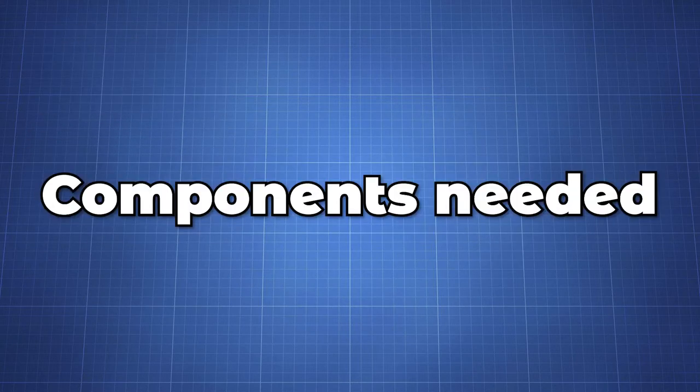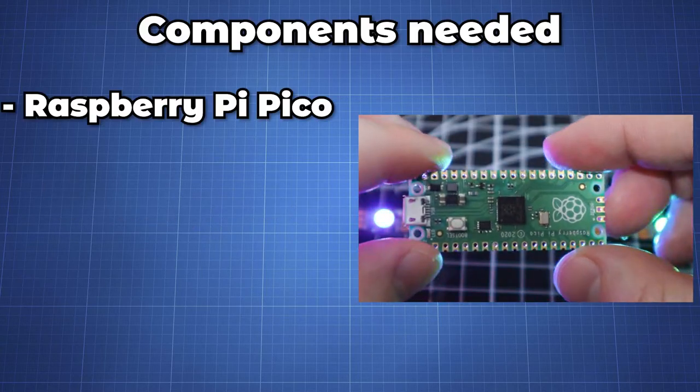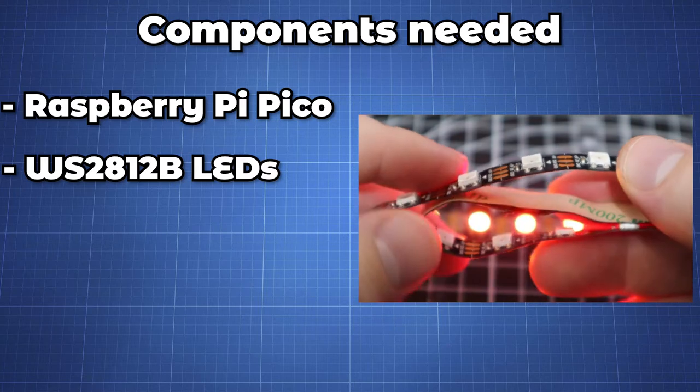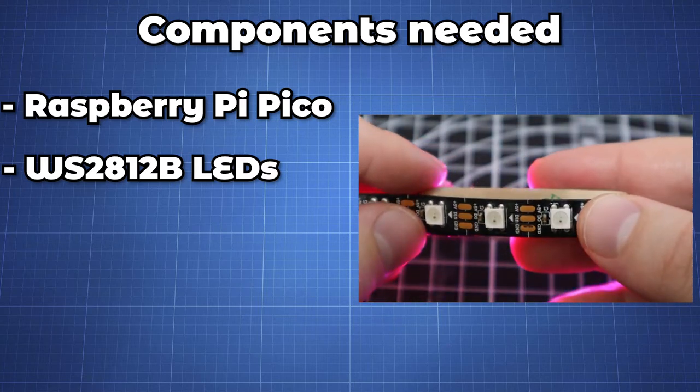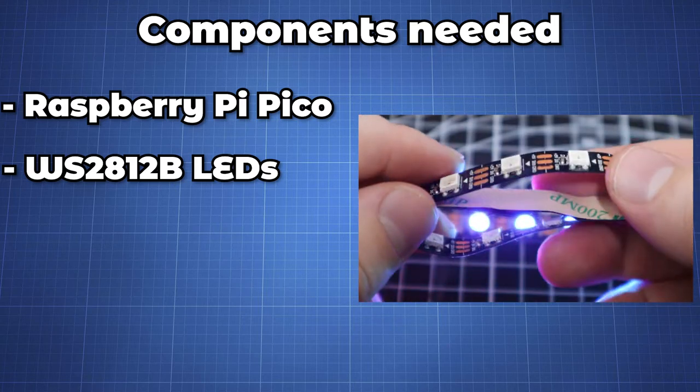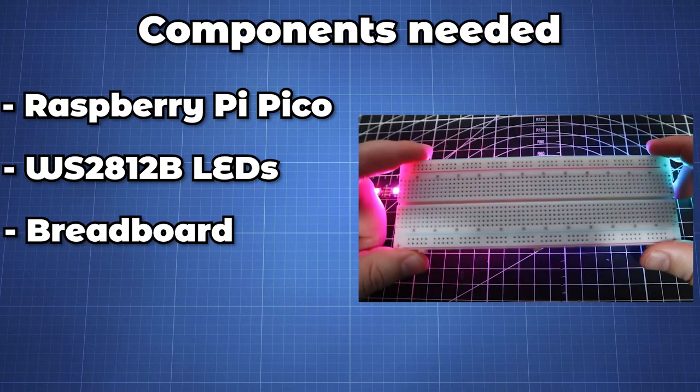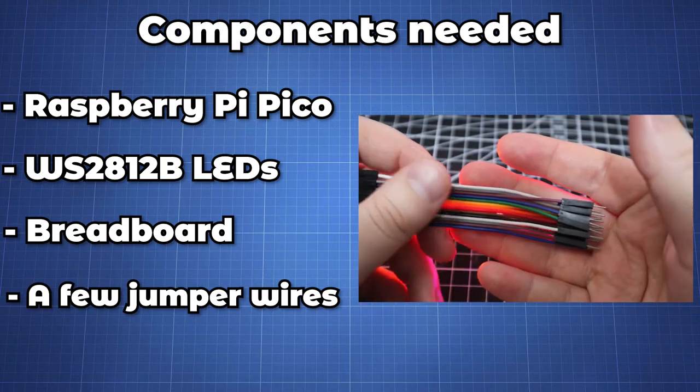You will need the following components to follow along: a Raspberry Pi Pico, NeoPixel or individually addressable RGB LED light strip. In this video I am using 20 LEDs from my 1 meter WS2812B LED strip with 30 LEDs per meter, a breadboard and a few jumper wires.